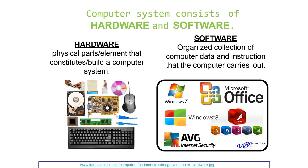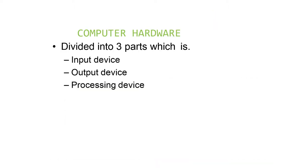A computer system consists of hardware and software. Hardware is the physical parts that build a computer system, while software is the organized collection of computer data and instructions that the computer carries out. Computer hardware is divided into three parts: input device, output device, and processing device.